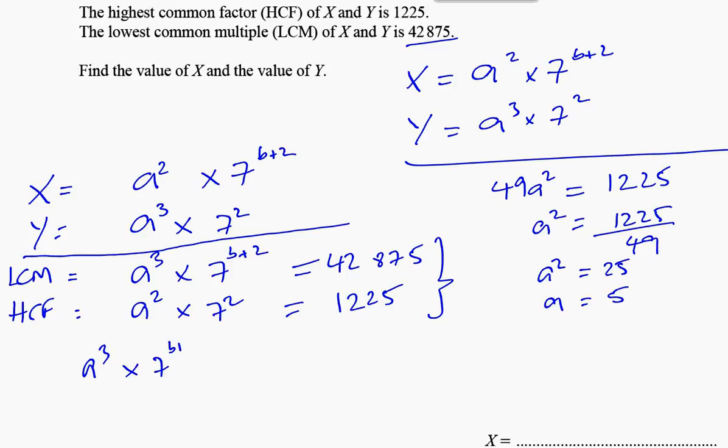Now we've already found what a is, it's 5. So 5³ is 125 times 7^(b+2) equals 42,875. We can divide both sides by 125. You have 7^(b+2) equals 42,875 divided by 125.